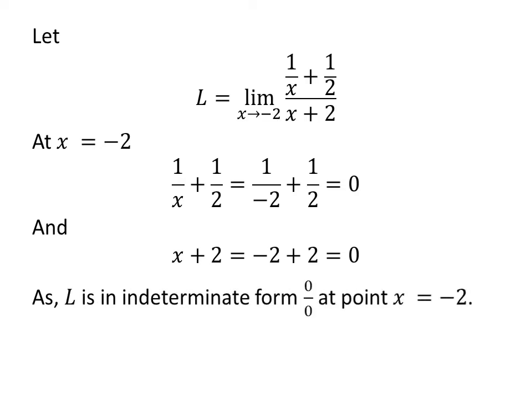At point x equals minus 2, the numerator is equal to 0 and also the denominator. So we can see that at point x equals minus 2, the limit L is in indeterminate form. To avoid this indeterminate form, let us further simplify the numerator.